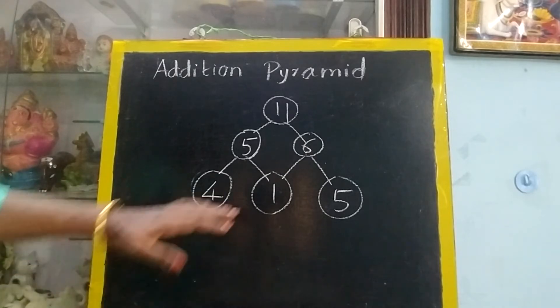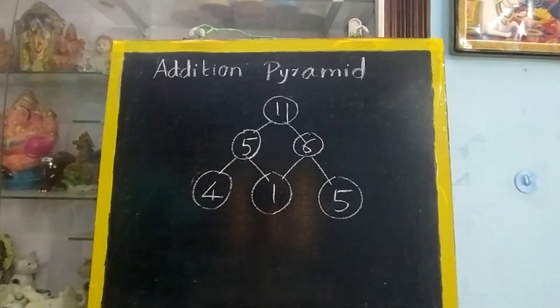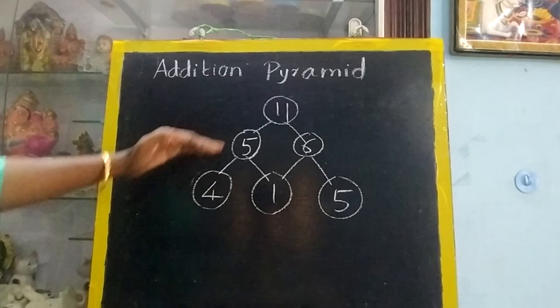So like this the pyramid will be going on. We can do even with many numbers. But in first standard you will learn only with 3, 2, 1.